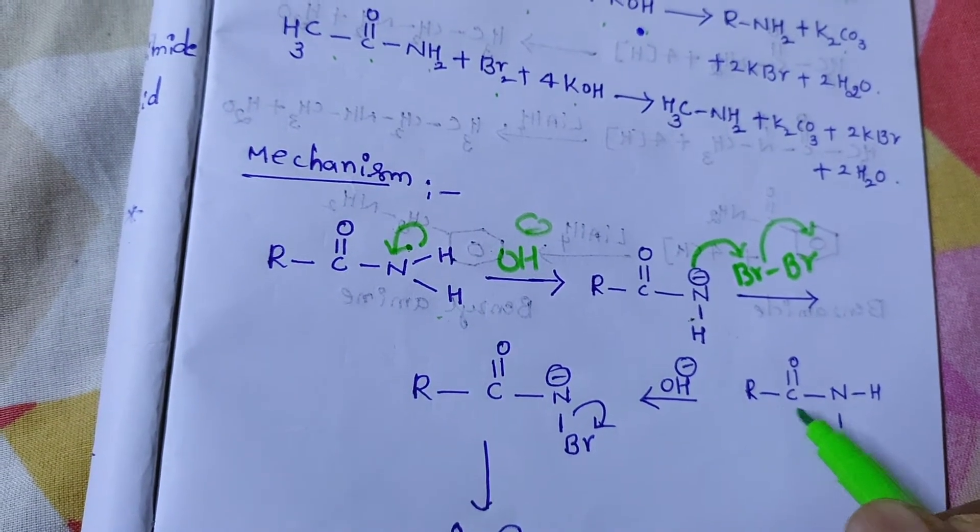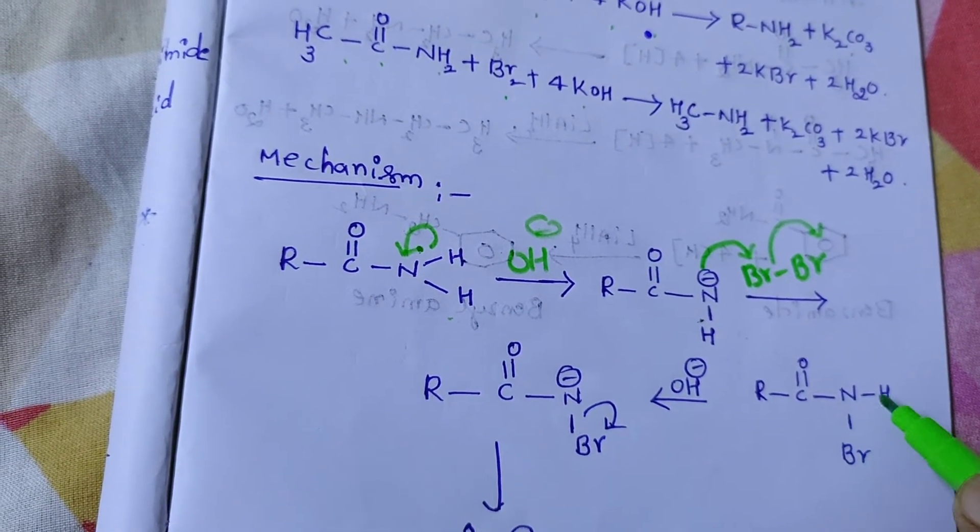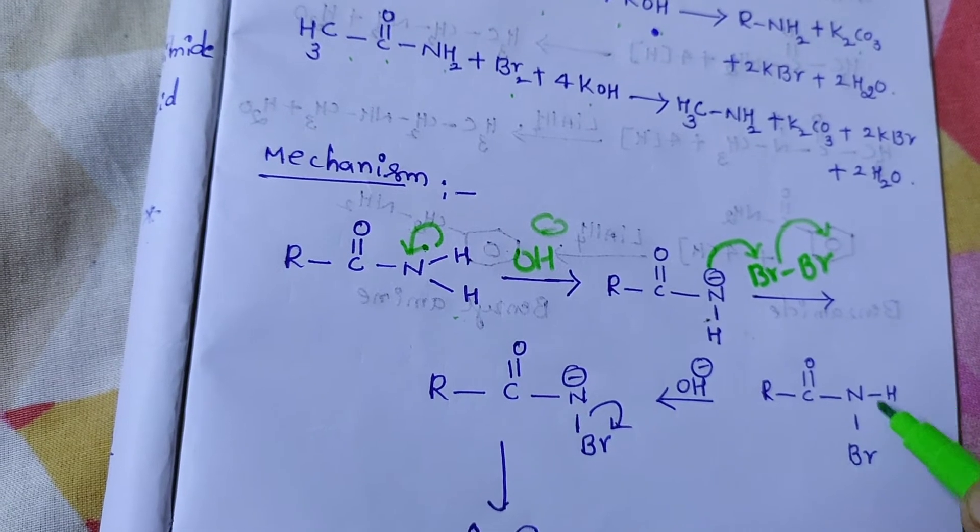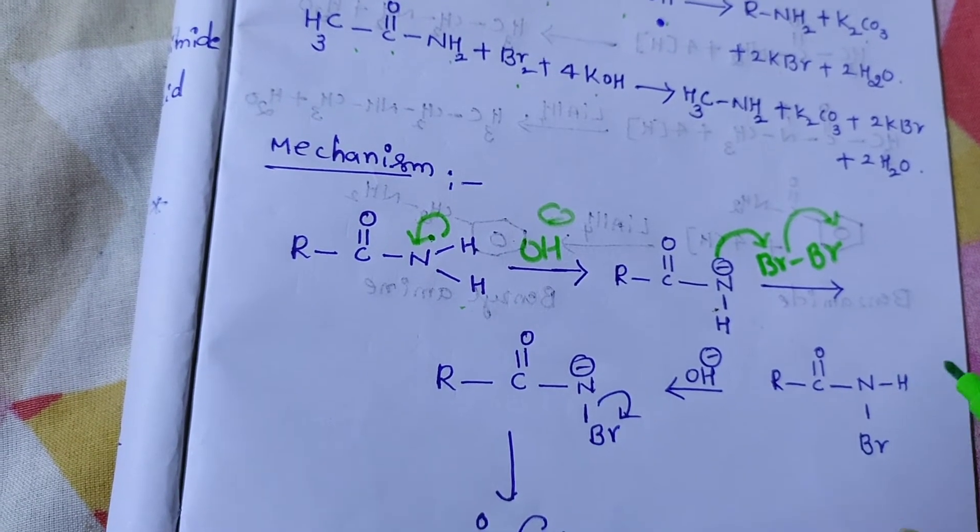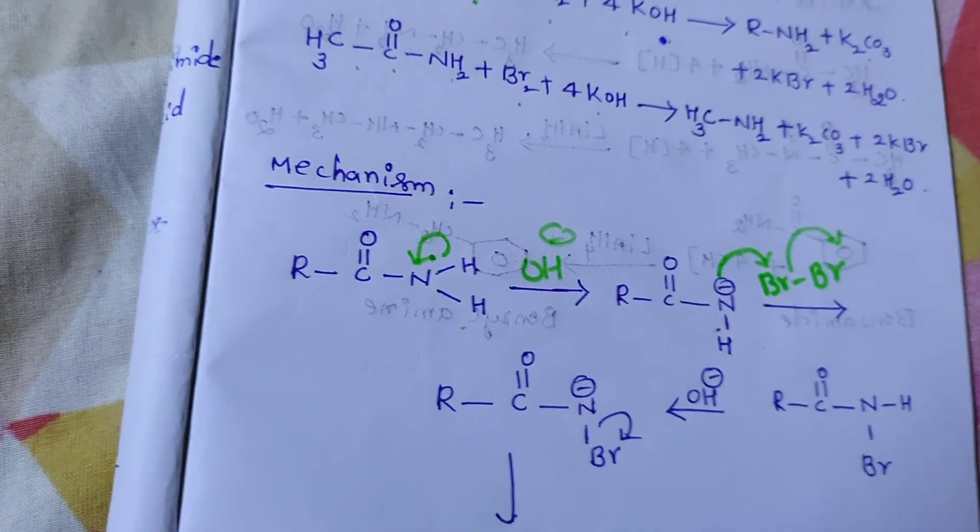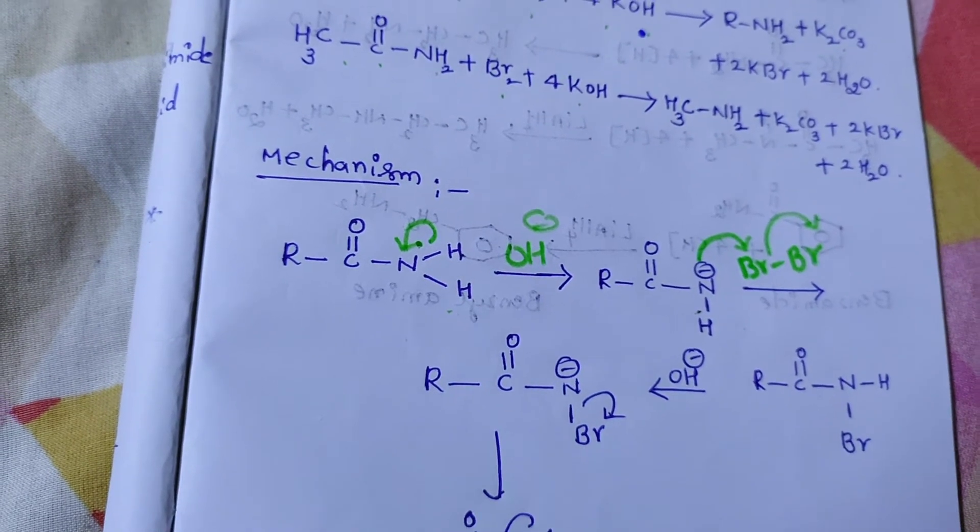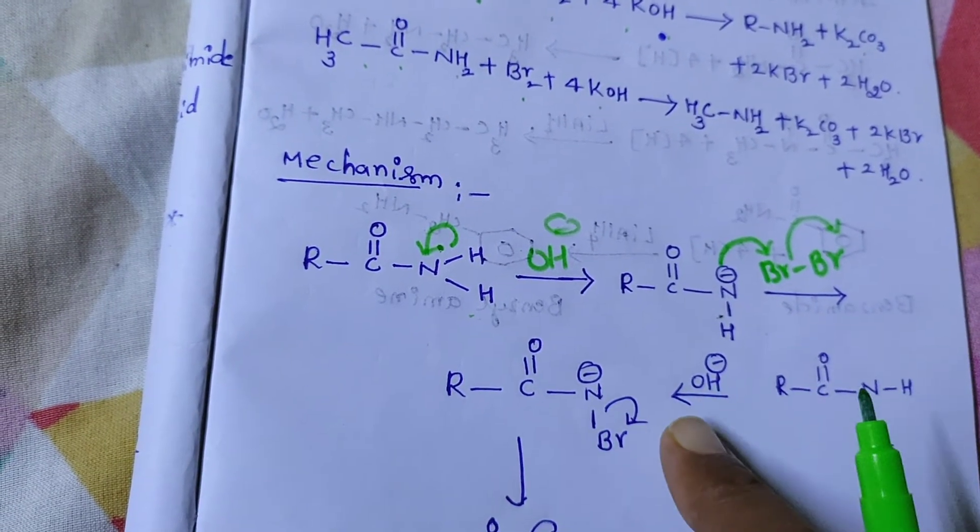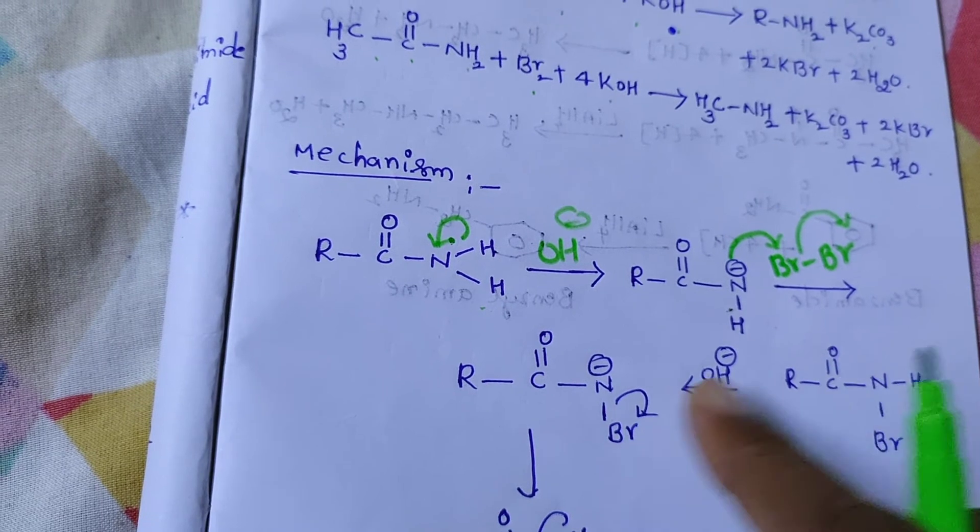Here, we have another hydrogen. Then, removing here with OH minus. I remove this hydrogen and these electrons shift to here and we get the N minus.